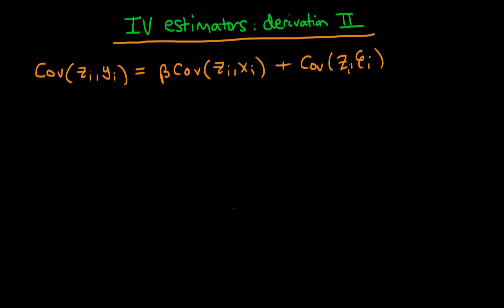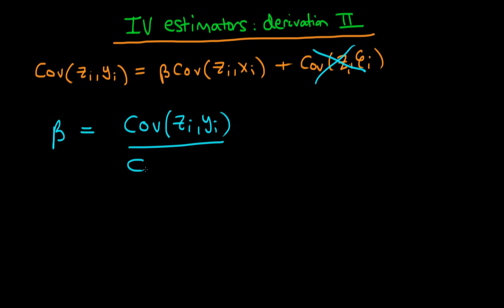In this video, we're going to complete our derivation of the IV estimator for the case of a bivariate model. At the end of the last video, we had this expression up here at the top. Furthermore, we were able to simplify this expression further by assuming that the covariance of our instrument with the error was actually 0. And if this second term on the right hand side is 0, that allows us to rearrange for beta. So beta here is equal to the covariance of Z_i with Y_i divided by the covariance of Z_i with X_i.